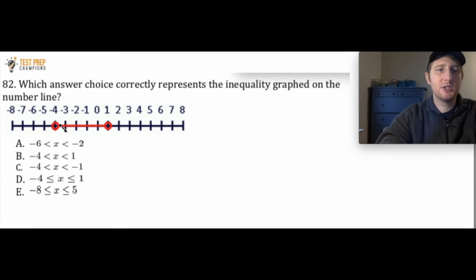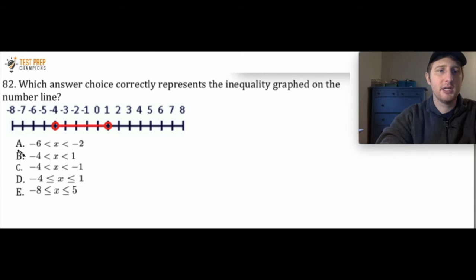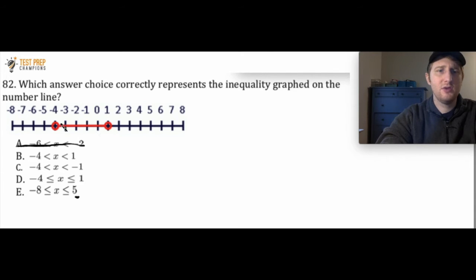We see this solid red line right here, showing us which numbers are going to be included in the range. Any numbers outside of this, we can automatically rule that answer choice out. For example, negative 6 down here is by itself — the red line does not include negative 6, so we can take E out. Same with answer choice A, because it has positive 5 and negative 8, which have nothing to do with the range of values by the solid red line. So we can take A and E out.